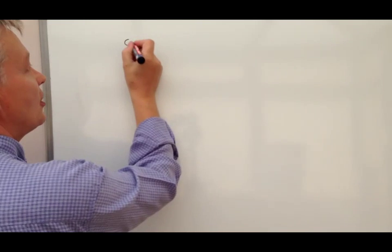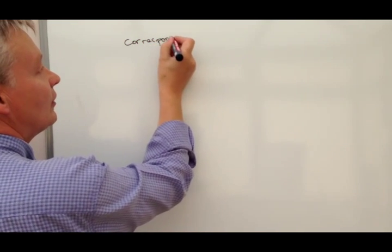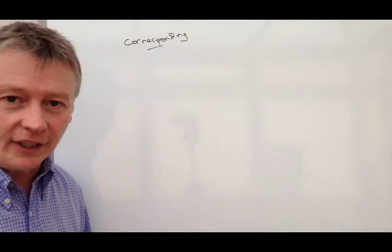So there's four things that you need to remember when you're dealing with angles and straight lines. The first one is, you don't need to worry too much about the name itself, but they call them corresponding angles.